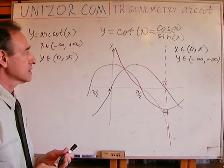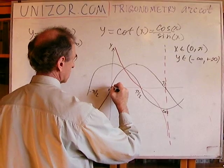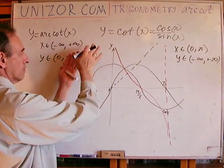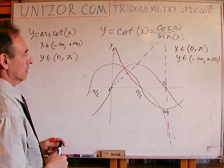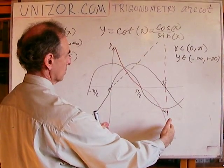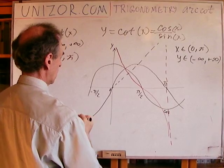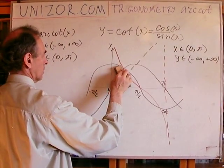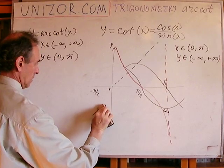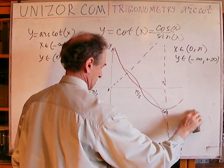Well, we know that the graphs of the function and its inverse are symmetrical relatively to the angle bisector. So, we have to turn our graph around this line. So, how would it look? Well, these two asymptotes would be turned to the horizontal one. So, we will have, let's wipe out our sine and cosine, which we don't really need anymore.